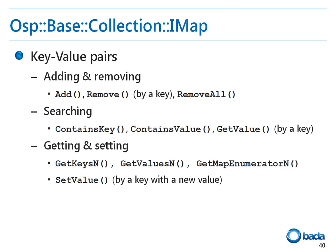To add an object to an iMap, you have to specify both the key and the value. You can also delete an object corresponding to a specified key. Functions are provided to check if there is an object with a specified key, to get the object corresponding to the key, to get all keys in the map, to get all values, to get the enumerator for the map, and to change the value for a specified key.